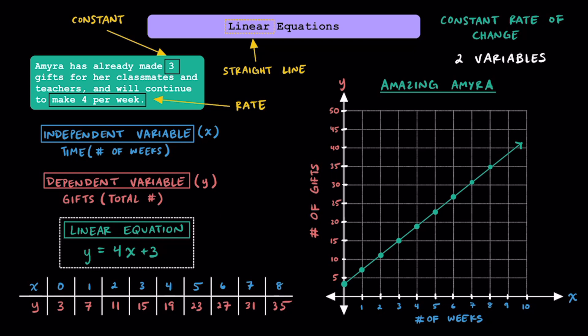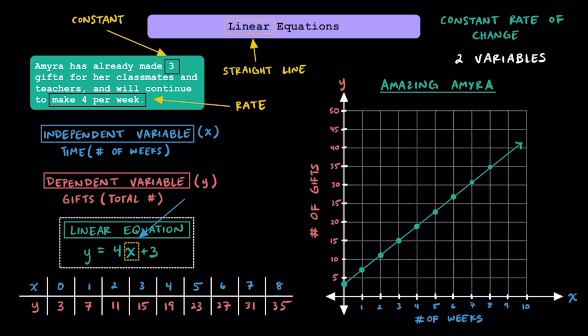That brings us to our linear equation. Linear equations are always going to have two variables. Alone on one side, we're always going to have the dependent variable by itself. On the other side, we'll always have a rate of change — which in this case is 4x, or 4 gifts per week — and our constant term, if we have one. The independent variable is always part of the rate, and our dependent variable depends on the rate of change and the constant term.